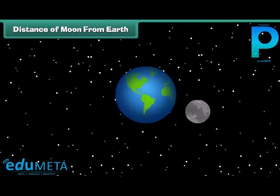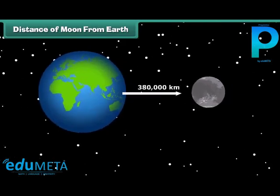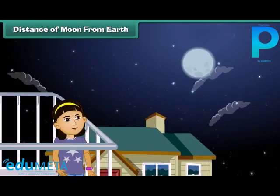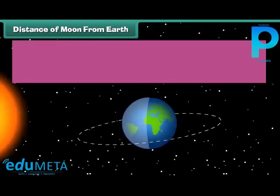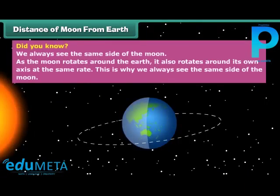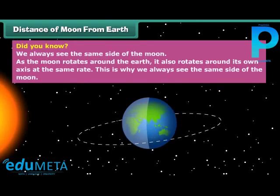The moon is an average of about 380,000 kilometers from Earth, which is pretty close. Because of its proximity, we don't need a telescope to see features on the moon's surface. Did you know we always see the same side of the moon? As the moon rotates around the earth, it also rotates around its own axis at the same rate, which is why we always see the same side.